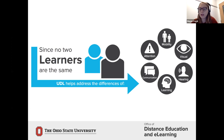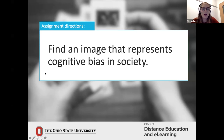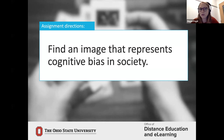I want to get into the less squishy stuff — the really tangible, easy fixes you can add to your content creation habits. Here's a prompt: 'Find an image that represents cognitive bias in society.' What would be the problematic word that makes this less inclusive or less accessible than it could be? Type your answer into the chat.